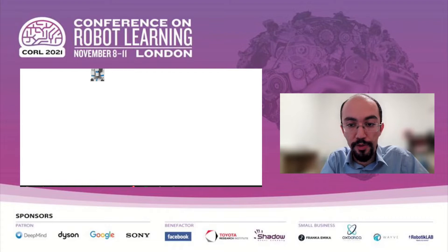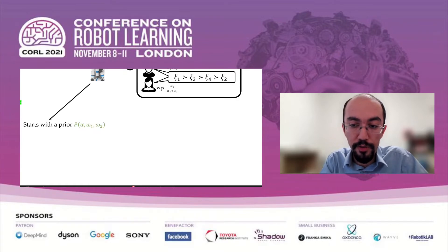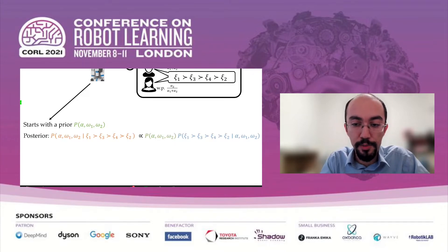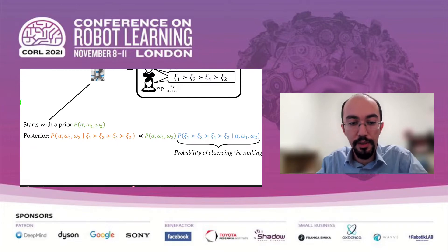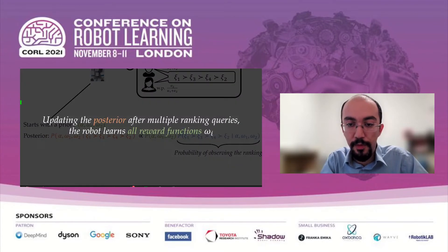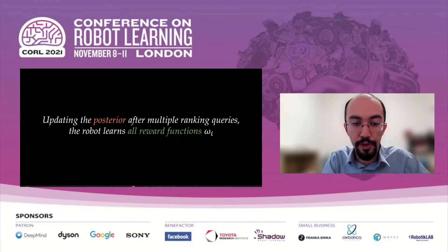From the robot's perspective, we have this user model. It doesn't know alpha, but it observed this ranking. It will start with a prior over both alpha and the user's reward functions, then use Bayes' rule to update its posterior based on the ranking it observed. The likelihood term here is just the response model I described, so we actually know everything on the right-hand side. The robot performs this posterior update for all ranking data it has. At the end, it will learn all reward functions — and in fact, it will even learn the data frequency parameter alpha.